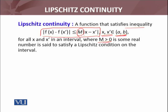And this is for all x and x' — any two numbers from that interval. So Lipschitz continuity — note that this condition holds for all x, x' belonging to (a, b).